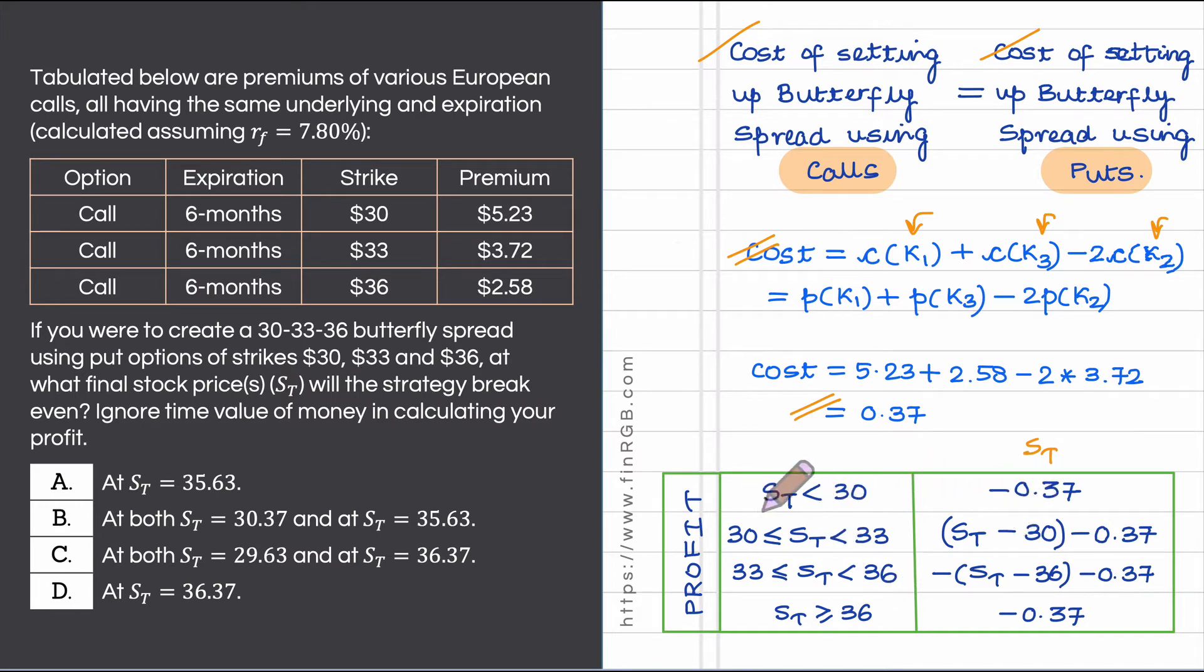Now, if I were to take a look at the profits in different sub intervals, sub interval one and sub interval four they are completely ruled out as far as break even is concerned because in these two sub intervals the profit doesn't even depend on S t and the profit in these two sub intervals is not zero.